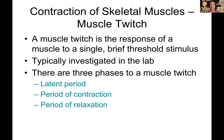One type of contraction we can see in whole muscles is a muscle twitch. A muscle twitch is your muscle's response to one single brief stimulus — an impulse comes down a neuron, the cell contracts and relaxes, and then you're done. This is not how our muscles usually work; it's something we typically investigate in a lab.